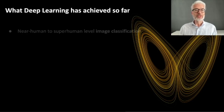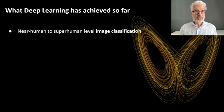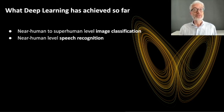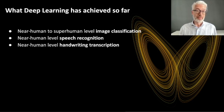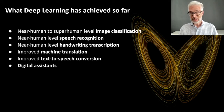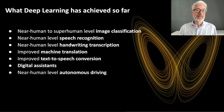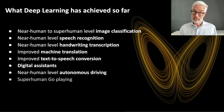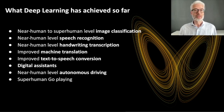So what has deep learning achieved so far? Near-human to superhuman level image classification — if you think of the cancer detection example. Also near-human level speech recognition, as well as handwriting transcription and machine translation. Text-to-speech conversion works rather well, as seen with the advent of digital intelligent assistants. Also near-human level autonomous driving, though people argue whether it is truly near human level. And of course, superhuman Go playing.